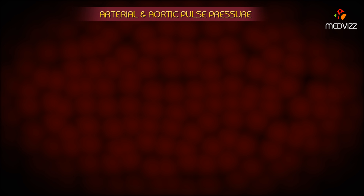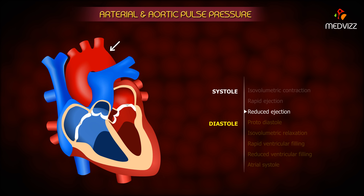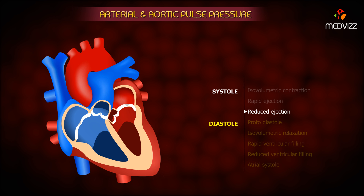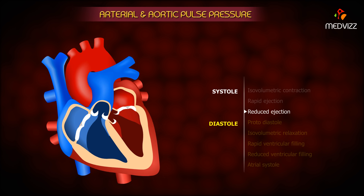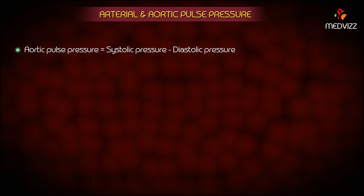As the left ventricle ejects blood into the aorta, the aortic pressure increases. The greater the stroke volume, the greater the change in aortic pressure during ejection. The maximal change in aortic pressure during systole — from the time the aortic valve opens until the peak aortic pressure is attained — represents the aortic pulse pressure, which is defined as the systolic pressure minus the diastolic pressure.